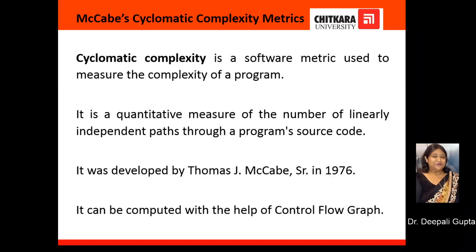Now, McCabe's Cyclomatic Complexity Matrix. As the name suggests, it was proposed by McCabe in the year 1976. Cyclomatic Complexity is a software metric used to measure the complexity of a program. It is a quantitative measure of the number of linearly independent paths through a program's source code.